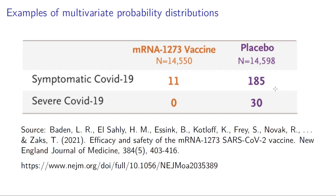This is a multivariate view — one variable could be whether a person received a placebo or the actual vaccine, and another variable could be whether they showed severe COVID-19 symptoms, some symptoms, or none. Looking at variables in a multivariate way gives you a better picture than just looking at a univariate distribution, and that's why we want to study multivariate probability distributions.